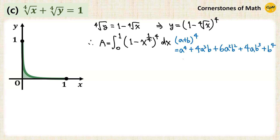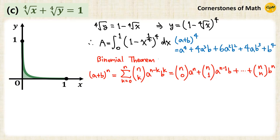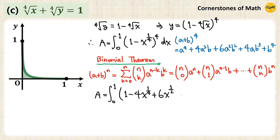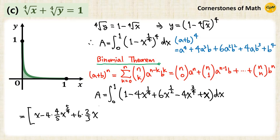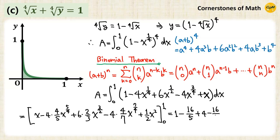Now we have to use the formula for (A plus B) to the power of 4. Some of you might have memorized this specific formula, but many of you are more familiar with the generalized version, the binomial theorem. If we expand, we have 1 minus 4x to the power of 1/4, plus 6x to the power of 2/4, minus 4x to the power of 3/4, plus x. So we have x minus 4 times (4/5) x to the power of 5/4, plus 6 times (2/3) x to the power of 3/2, minus 4 times (4/7) x to the power of 7/4, plus 1/2 x squared. So 1 minus 16/5 plus 4 minus 16/7 plus 1/2, which gives 1/70.